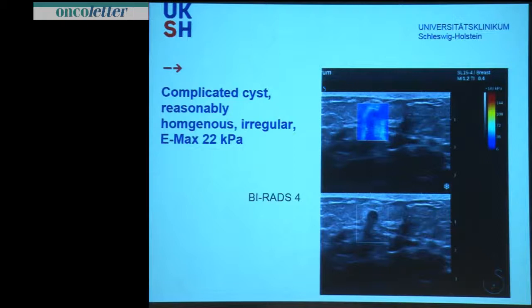Looking at this lesion: a hypoechoic lesion on the dorsal part, not very well defined — we call this a BIRADS 4 lesion. In shear wave there is a quite homogeneous finding; Emax was only 22 kilopascal. This was also biopsied and turned out as a complicated cyst.